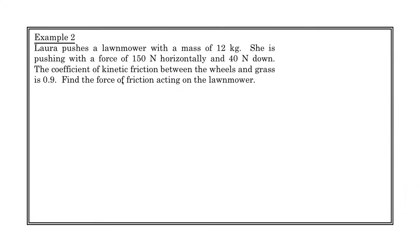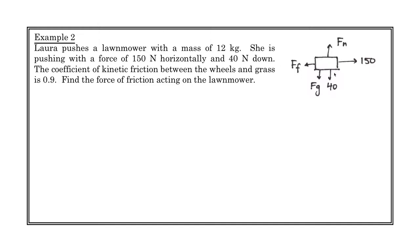Example number two: Laura pushes a lawnmower with a mass of 12 kilograms. She pushes horizontally with a force of 150 newtons, but also pushes down with 40 newtons. The coefficient of kinetic friction between the wheels and the grass is 0.9. Because we're pushing down, we're actually increasing the normal force, which makes friction bigger. The first step is always to draw the free body diagram: 150 newtons horizontally, 40 newtons downward, gravity down, normal force up, and friction opposing the horizontal motion.